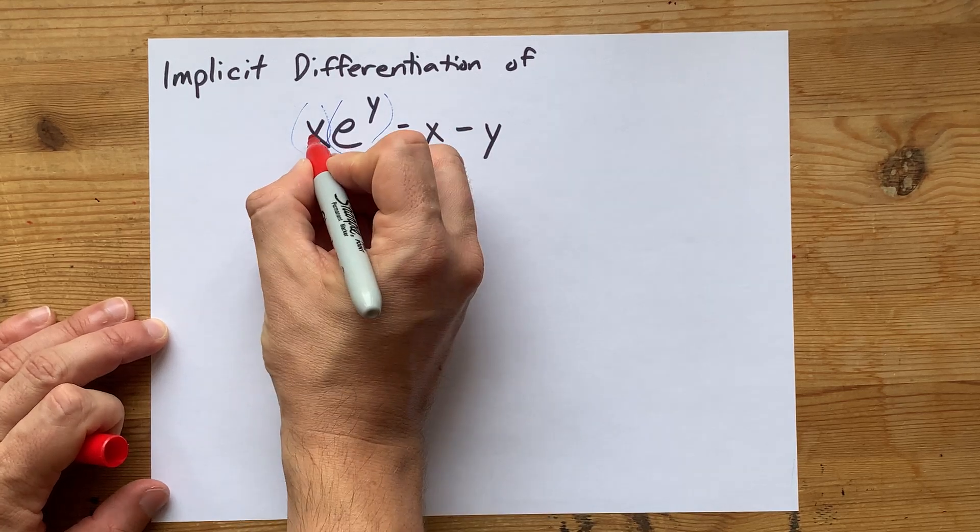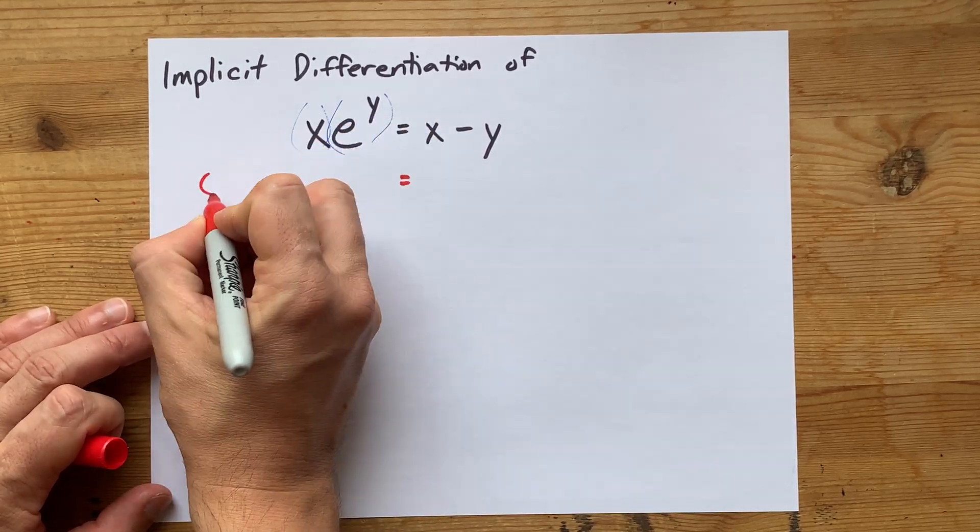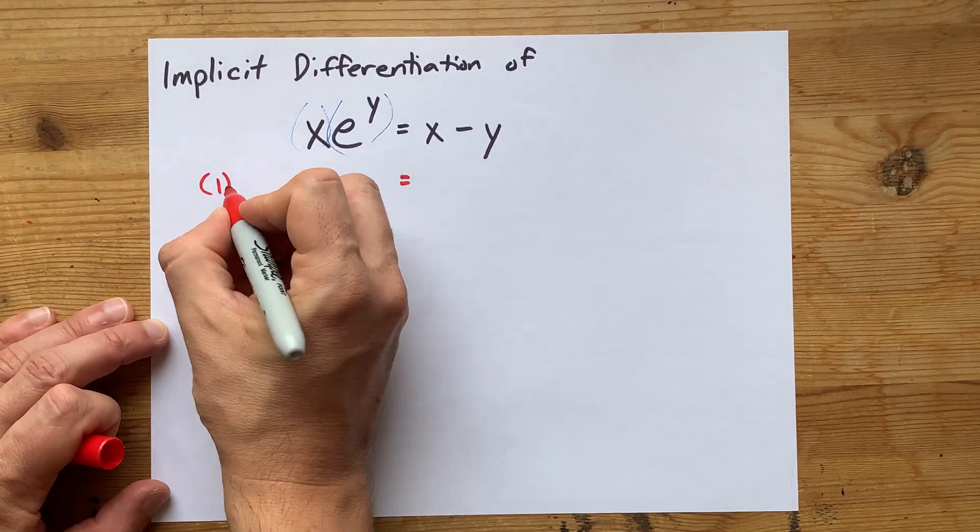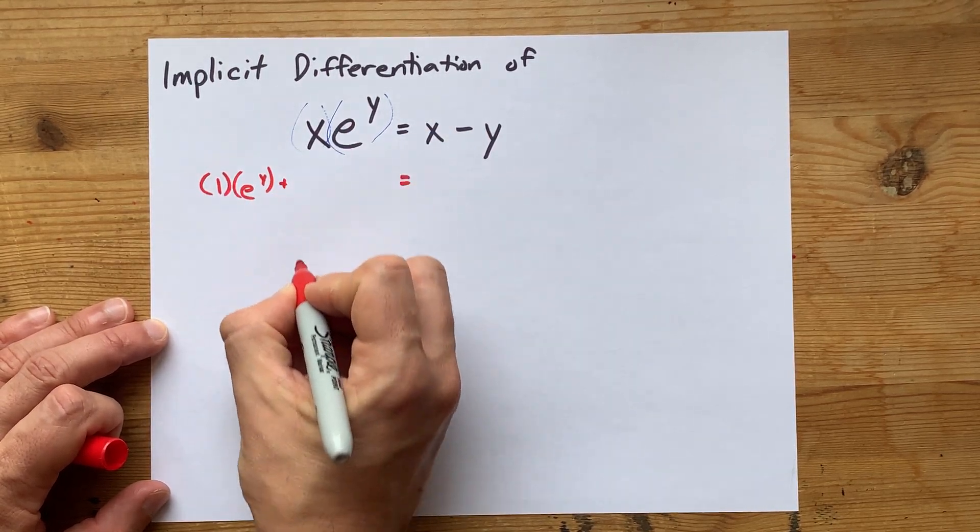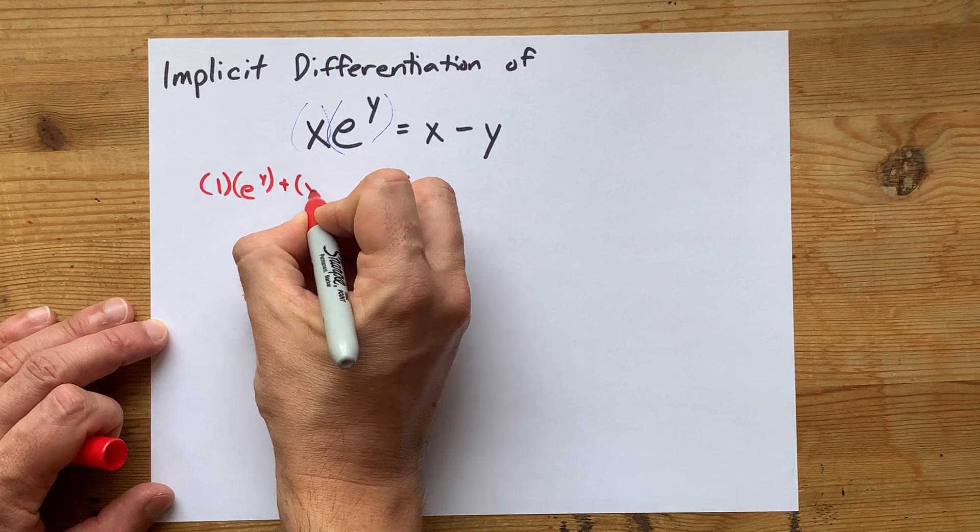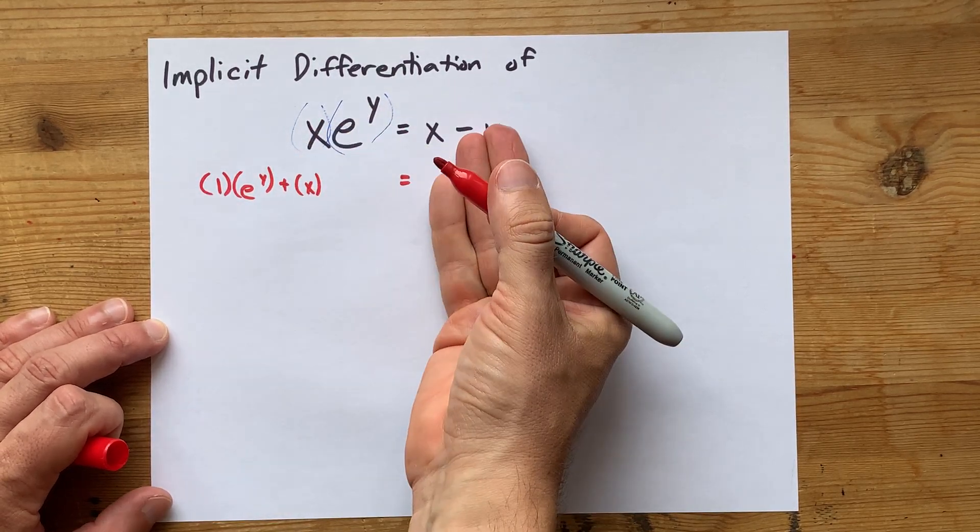Product rule is, derivative of the first thing, derivative of x is actually just 1, times the second thing as is, added to, and then you take the first thing as is, times the derivative of the second thing.